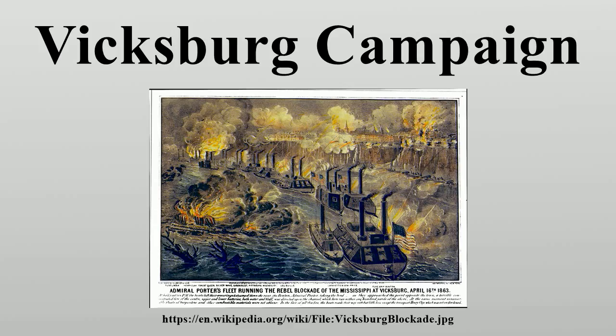Farragut investigated the possibility of bypassing the fortified cliffs by digging a canal across the neck of the river's bend, the De Soto Peninsula. On June 28, Brig. Gen. Thomas Williams, attached to Farragut's command, began digging work on the canal by employing local laborers and soldiers. Many of the men fell victim to tropical diseases and heat exhaustion, and the work was abandoned by July 24.